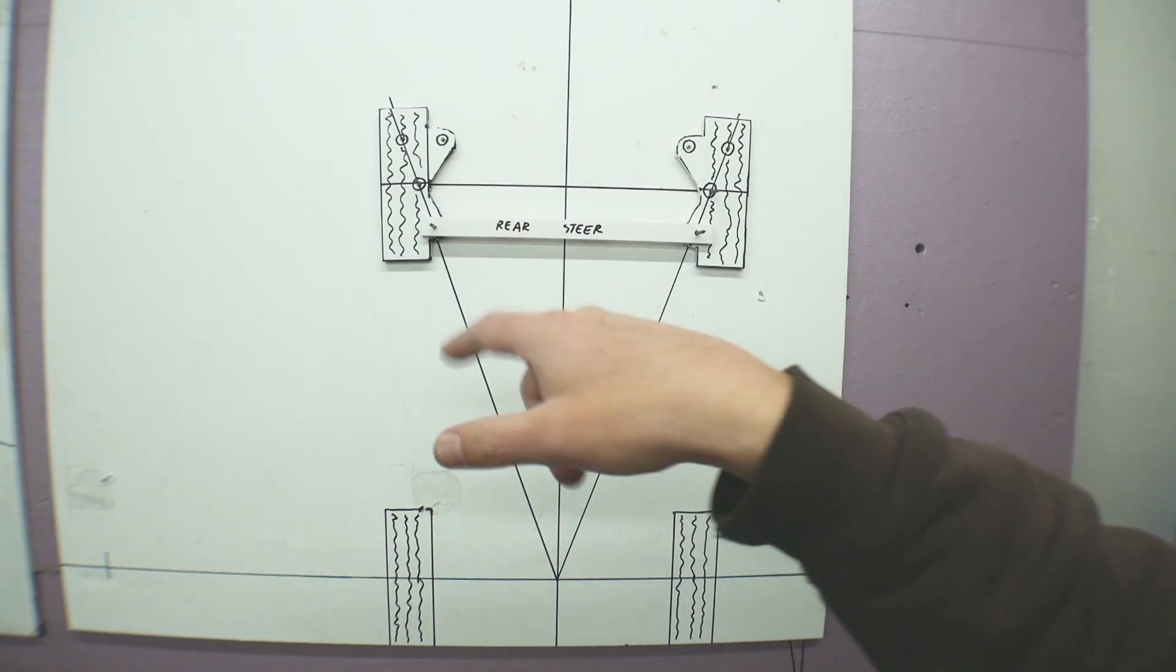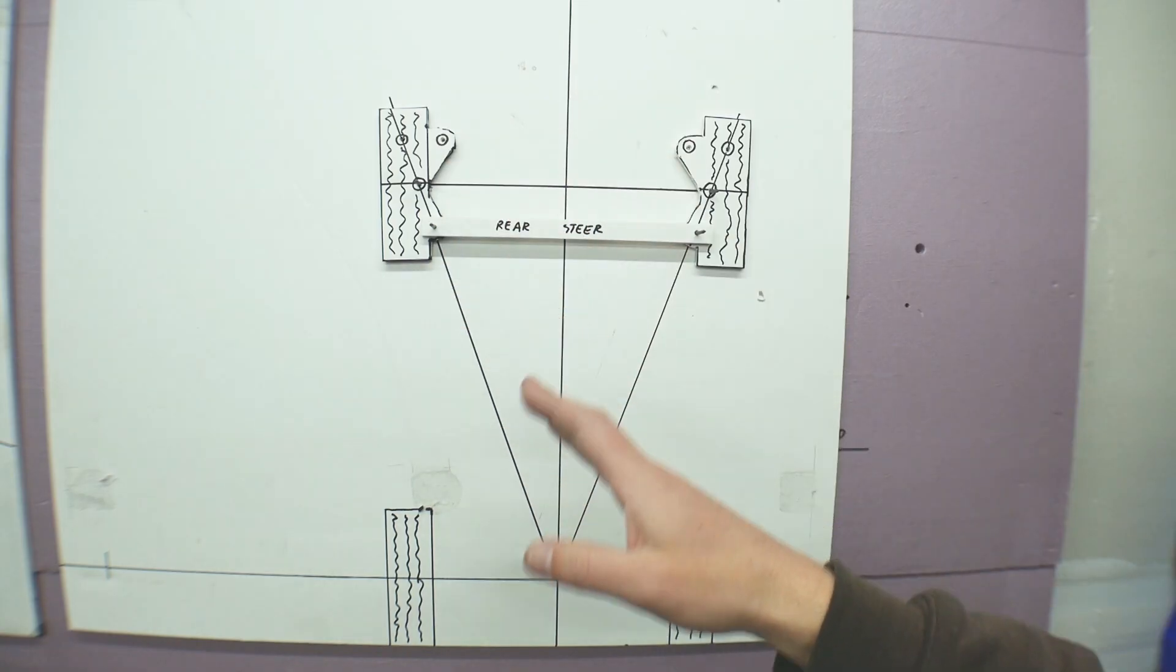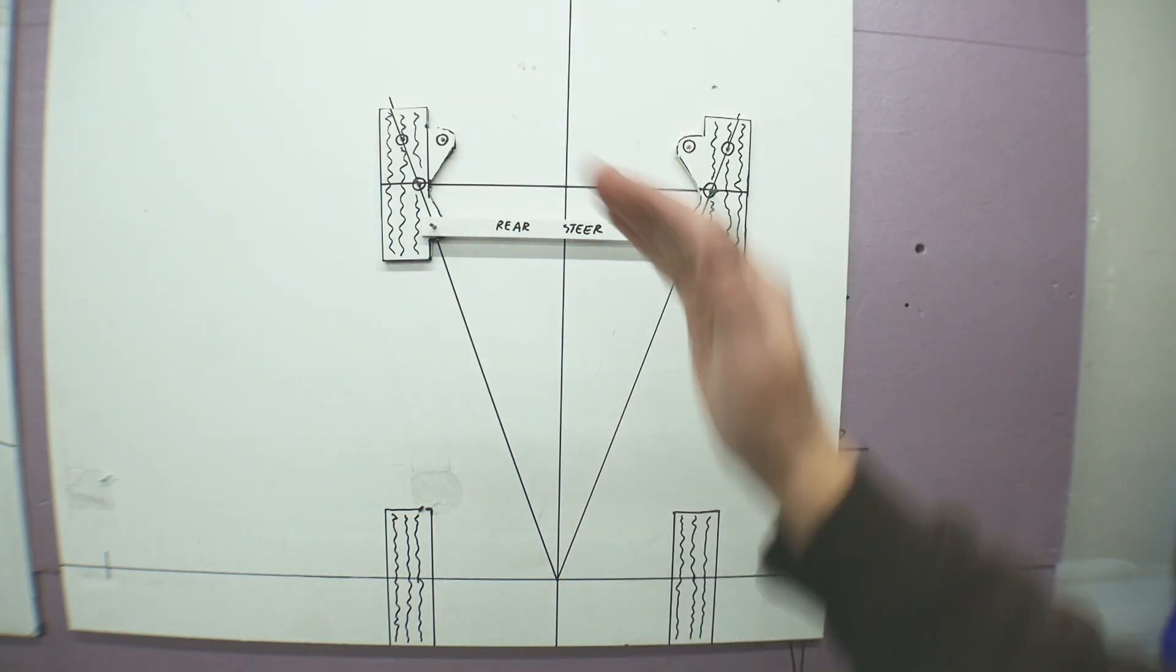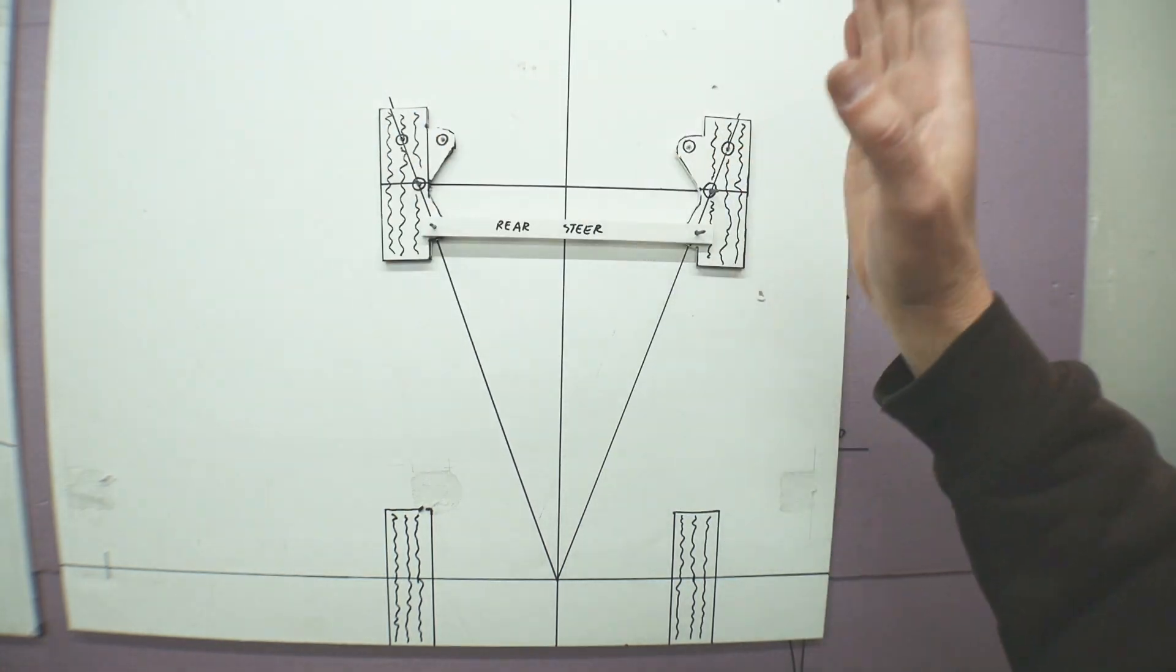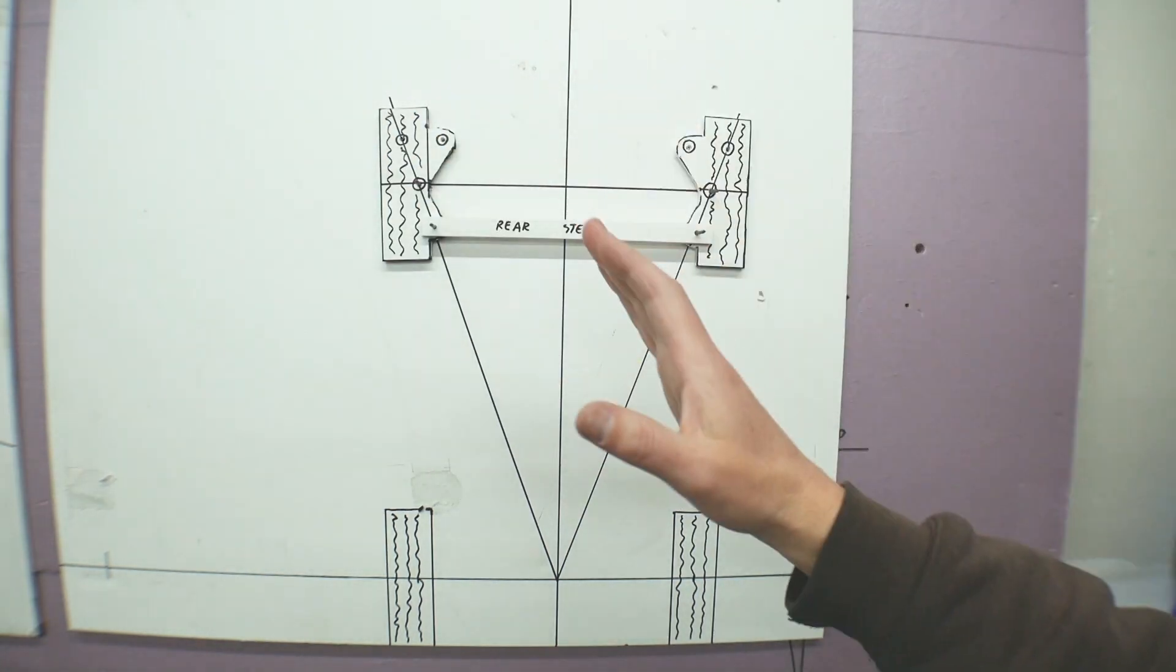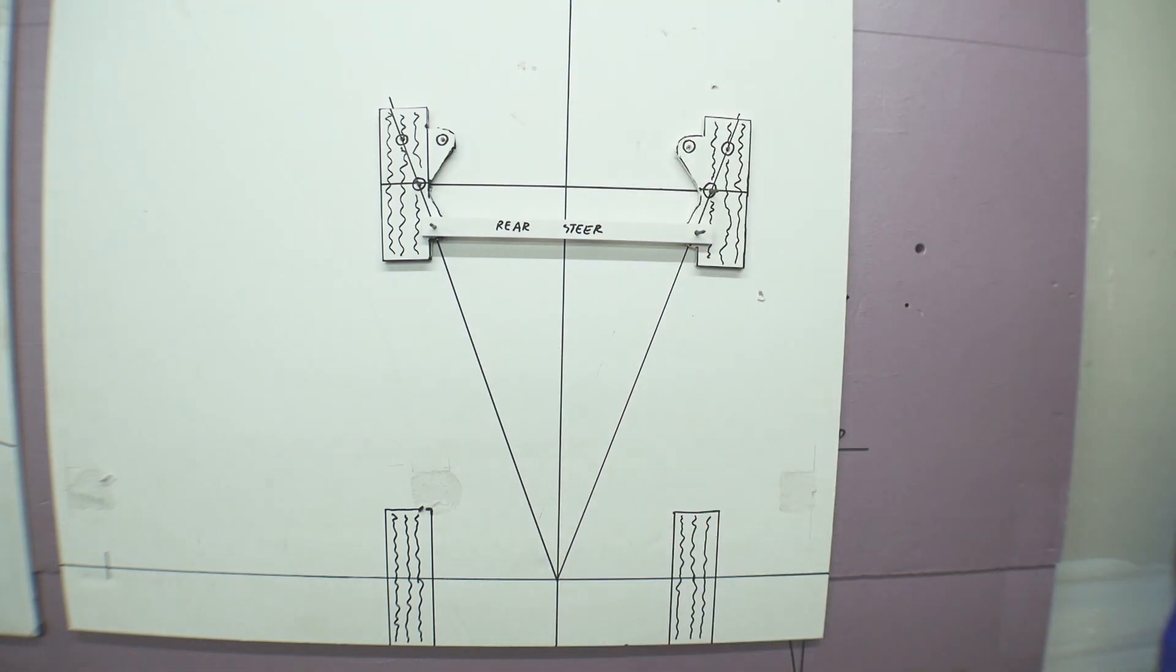If you had basically a one-to-one steering ratio and both wheels turned the same amount, that would work. You would make the turn, but because the angles would be the same, one of those wheels would have to scrub or slide or whatever you want to call it. It would kind of be like making a turn without a differential.